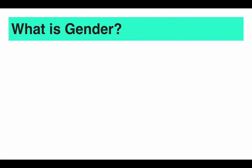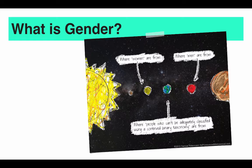Let's take a closer look at what gender really is. I have this funny little infographic here to show our typical view of gender — Men are from Mars, Women are from Venus — and this picture addresses where people who can't be adequately classified using a contrived binary taxonomy are from. We'll talk about gender, the gender binary, and the fact that it doesn't quite exist. Before we go on, I want you to pause for a minute and write down what you think gender is — your definition of gender — and maybe when you discovered you had a gender, or when you knew your children had a gender.